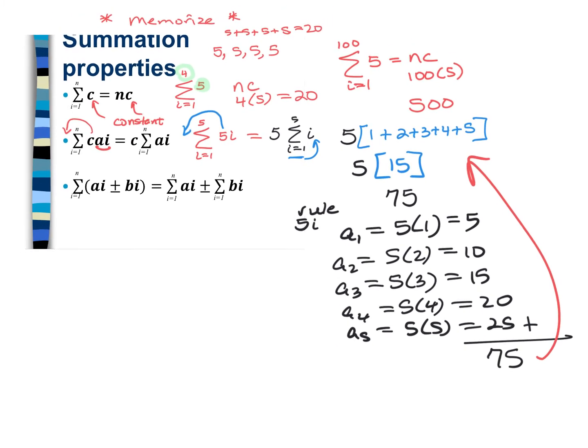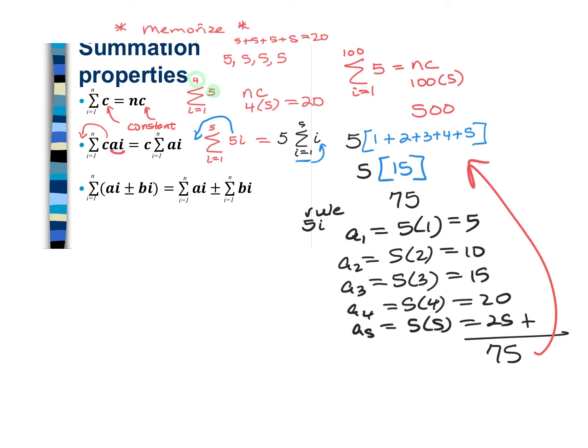The last property: when you're adding two things, give each one its own summation notation and evaluate them separately. We'll see some examples of this.